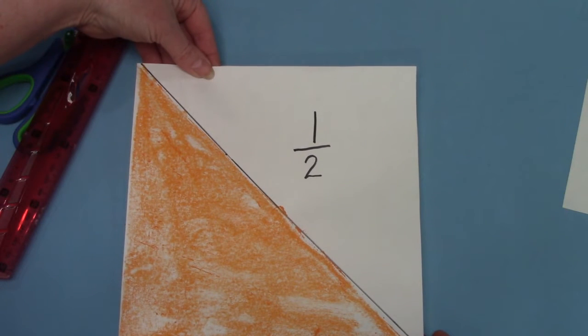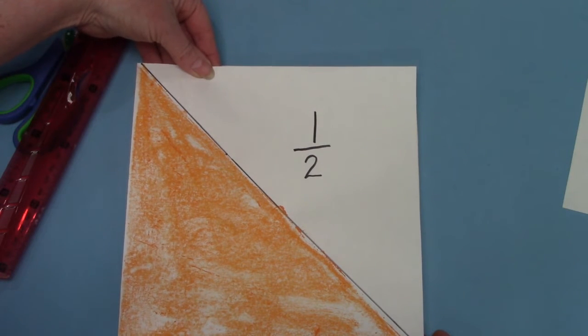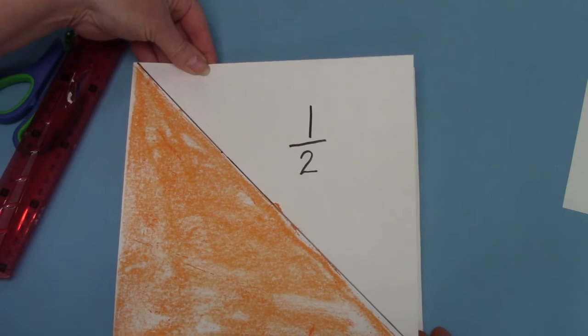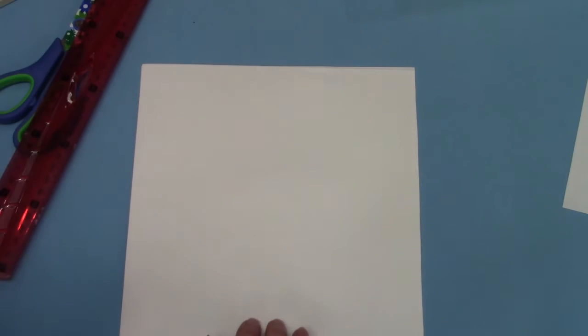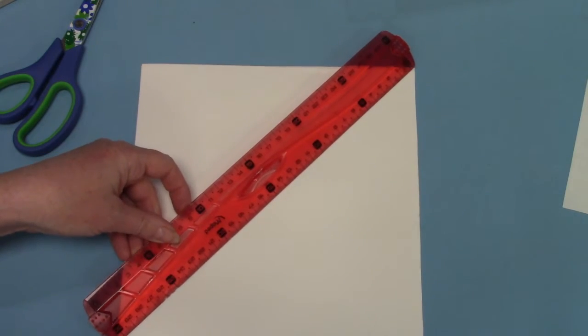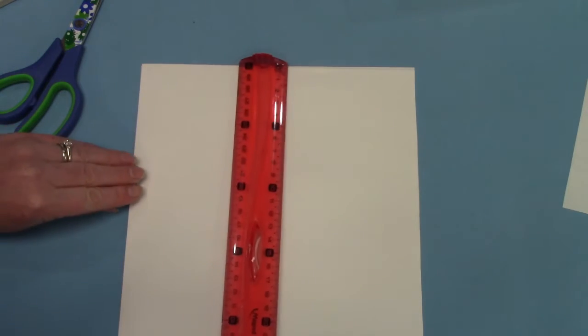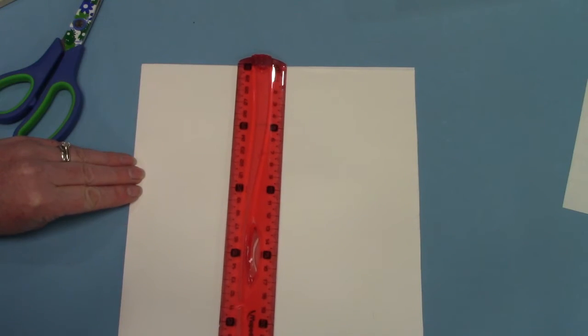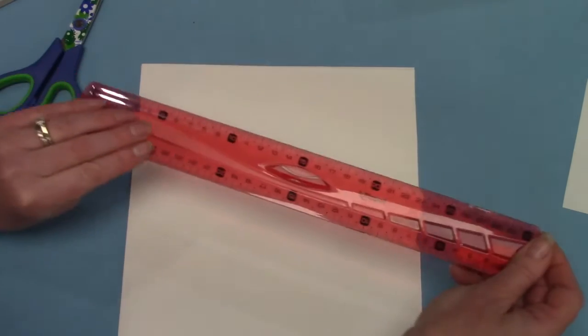I wonder if we can divide a square in half a different way. Let's try. Hmm. Instead of doing one corner to the other corner, what if we did it straight up and down instead?